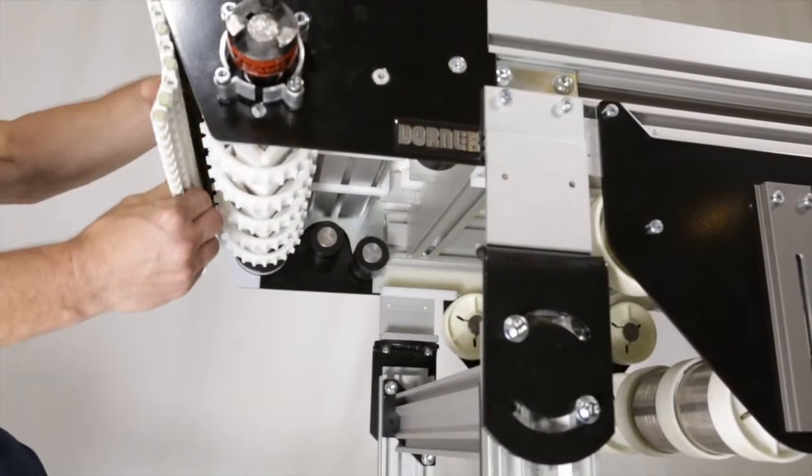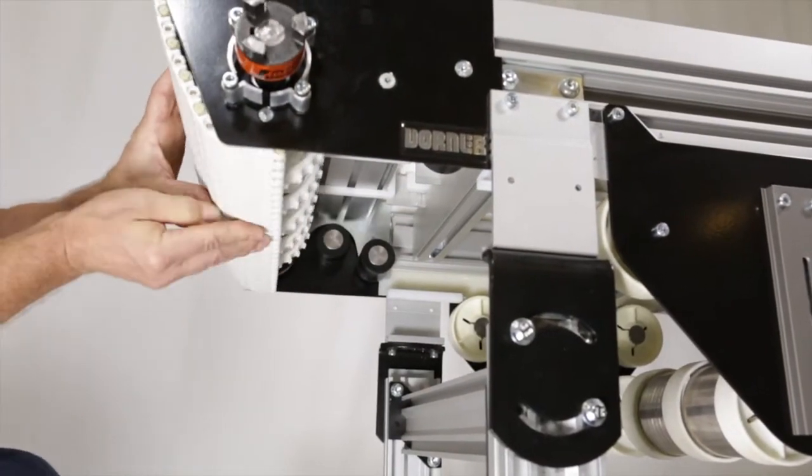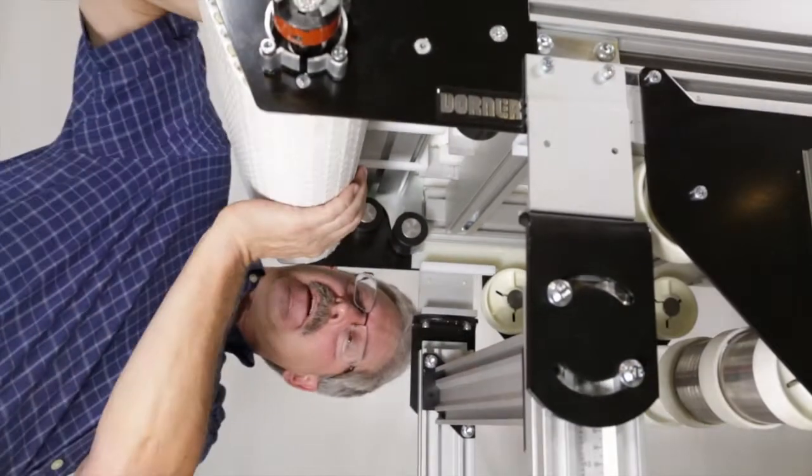Wrap the belt around the drive end of the conveyor, making sure the sprocket teeth have engaged the belt.